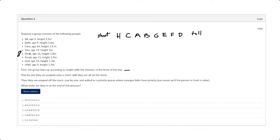And then I say one by one they're popped onto a stack. So who's in the front of the line here? So the stack is going to look like this: H, C, A, B, G, E, F, and D.